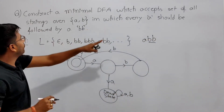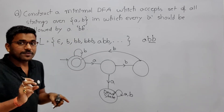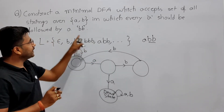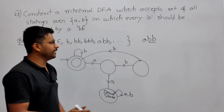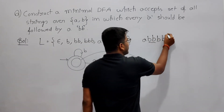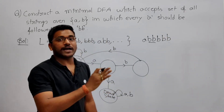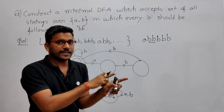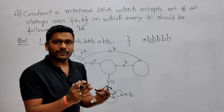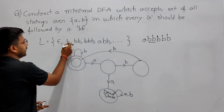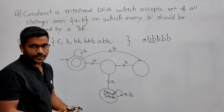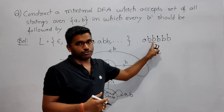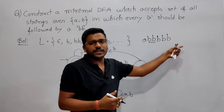In which every A should be followed by BB — it doesn't mean that after A there should be exactly two B's. After A there should be two B's, and after that it can have anything — any number of B's. If it is not having A, you can have anything like any number of B's. But if you are having A, then after that you should have at least two B's, and then any number of B's after that.